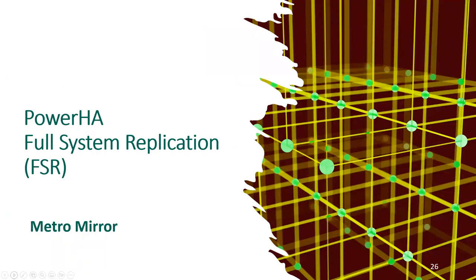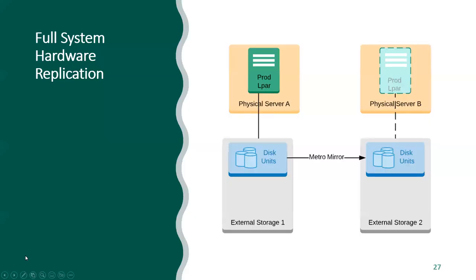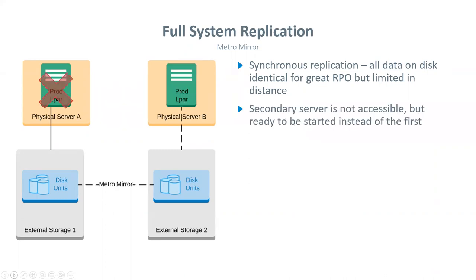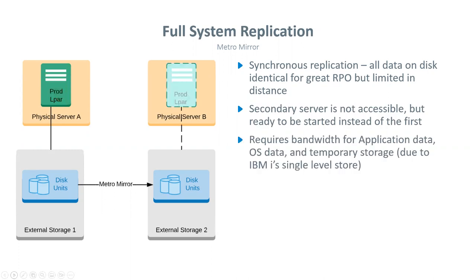Now moving on to Full System Replication, or FSR. The first technology is called Metromere. With FSR, we have our IBM i with external storage, and we add a second external storage device. The external storage does replication between them, so everything on disk gets replicated to the secondary external storage device. With Metromere, it is synchronous replication, meaning all data on disk is replicated and that second copy is identical. It is limited in distance because the further apart you spread them, the longer it takes for that data to get there, and the system can't continue until both copies are the same.